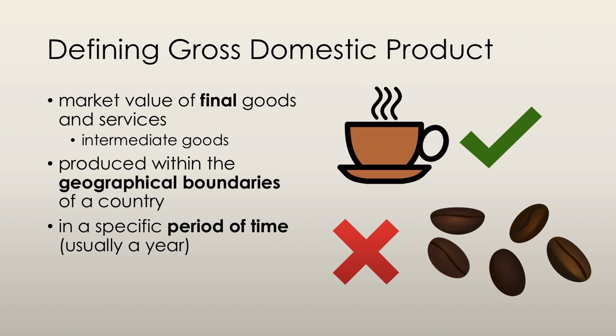Some goods such as stocks, secondhand goods, bonds, used cars, and existing homes are not counted as part of GDP because they were already counted as part of GDP in the year in which they were produced.